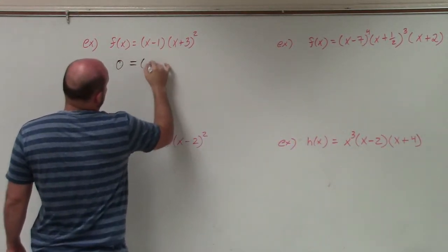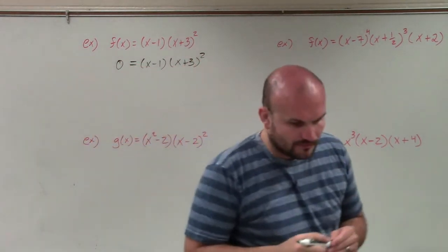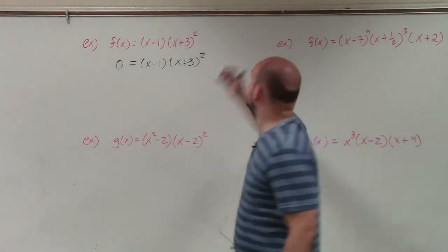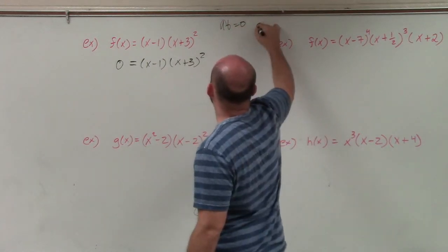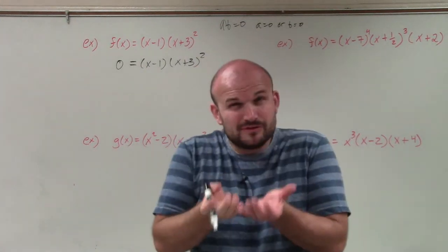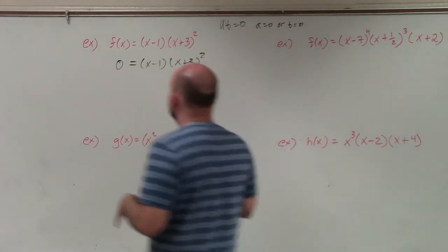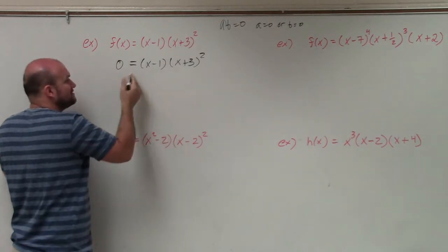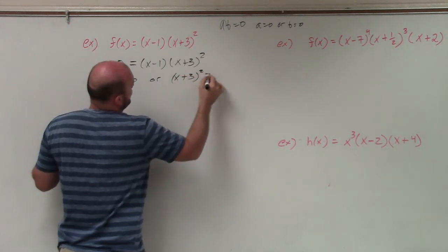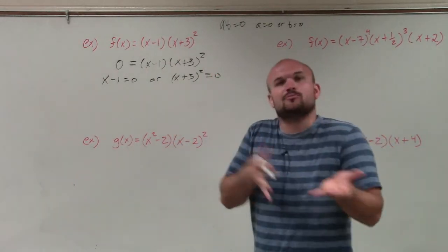So first we're going to set our f(x) equal to zero, and then we're going to set all of our factors equal to zero. The zero product property states: if you have a times b equals zero, that means a equals zero or b equals zero. So when you have two terms set equal to zero, one of them has to be equal to zero — and that could be terms or expressions.